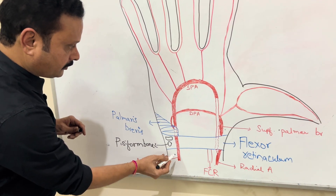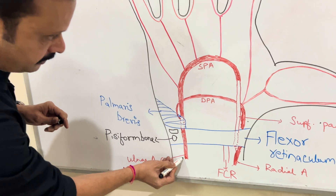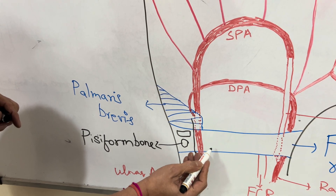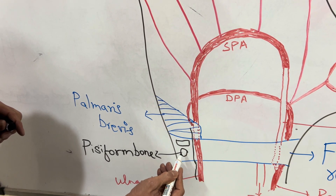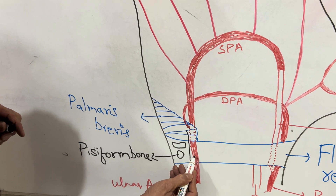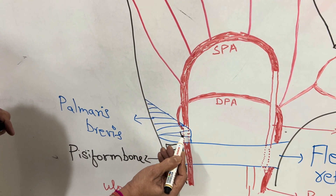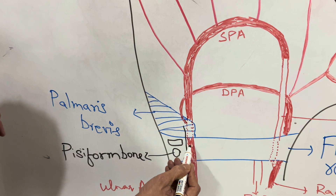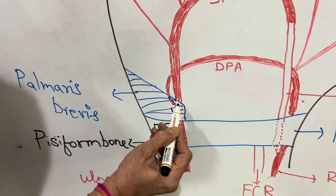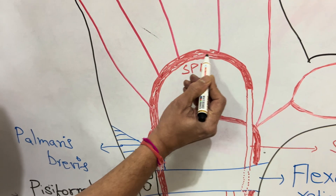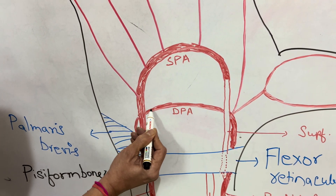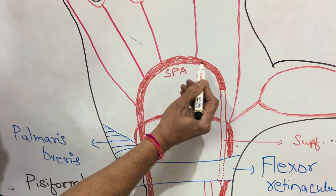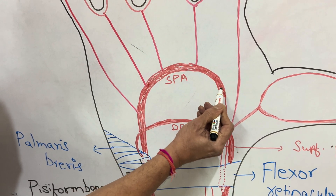The ulnar artery, along with its associated nerve, passes superficial to the flexor retinaculum lying lateral to the pisiform bone. On crossing the flexor retinaculum, under cover of the palmaris brevis muscle, the ulnar artery divides into a superficial branch and a deep branch.